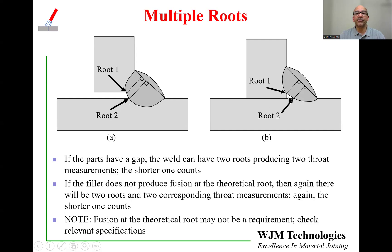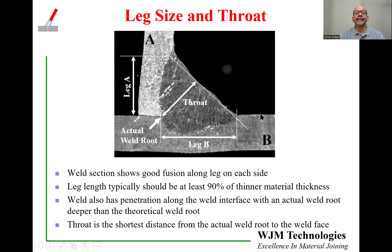Keep in mind that fusion at the theoretical root may not be a requirement in a weld specification, so check the relevant specification for your application. Here is a cross-section of a real weld with part A and part B in a T junction with a fillet weld. You can see the actual root, and the line drawn from the actual root to the weld face is the throat. Leg A is measured on the A side and leg B on the B side. Typically, the leg length must be at least 90% of the thickness of the thinner of the two materials.